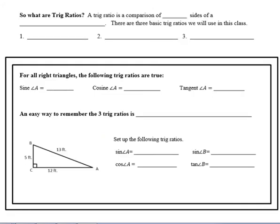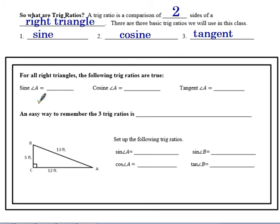Moving on — what exactly is a trig ratio? A trig ratio is a comparison of two sides of a right triangle. There are three basic trig ratios: sine, cosine, and tangent. On the calculator you see them written as sin, cos, and tan, but we still say sine, cosine, and tangent.